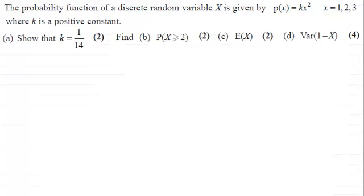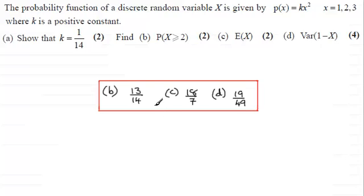Okay, welcome back. So first of all, the numerical solutions to b, c, and d. Well, b is 13/14ths, c is 18/7ths, and d is 19/49ths. So if you'd like to see how I went about these parts, I'll take you through.